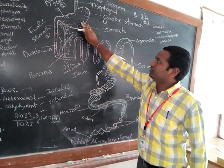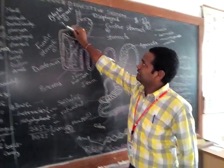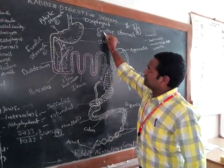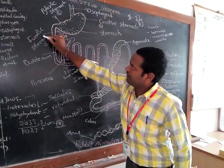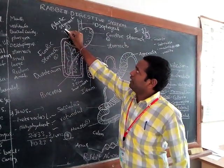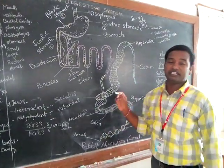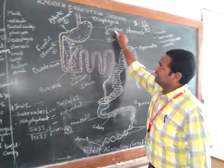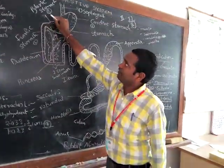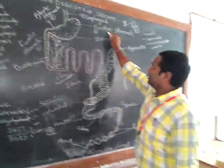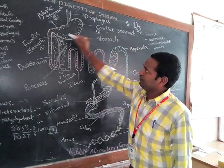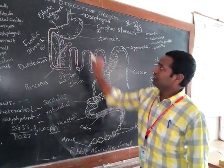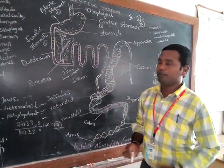The stomach consists of three parts. The first part is the cardiac stomach, the second is the fundic stomach, and the third is the pyloric stomach. The cardiac stomach is the anterior part, the fundic stomach is the middle part, and the pyloric stomach is the posterior part.